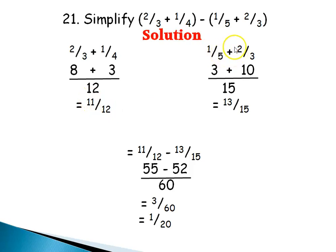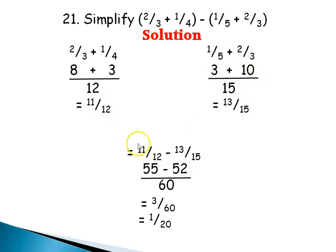For the second bracket, 1/5 + 2/3: the LCM of 5 and 3 is 15. 5 into 15 is 3; 3 times 1 is 3. 3 into 15 is 5; 5 times 2 is 10. 3 plus 10 is 13, giving 13/15. Now I'll bring the two results together: 11/12 minus 13/15.